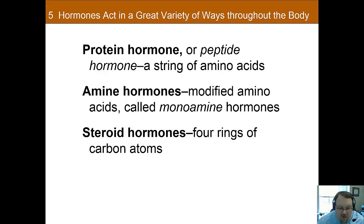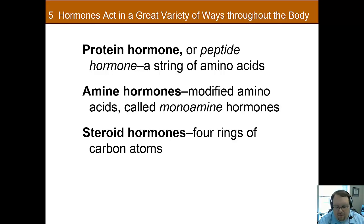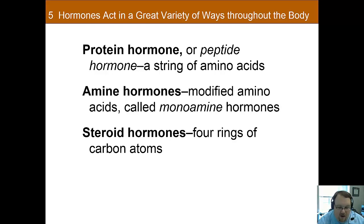Steroid hormones derive from cholesterol and thus share its 4-carbon ring structure. One important aspect of steroid hormones is that they're lipid soluble. The reason this is important is because the cell wall is a lipid bilayer — lipids keep molecules from passing in or out because most molecules in the extracellular and intracellular fluids are not lipid soluble. However, with steroids, since they are lipid soluble, they can actually pass through that wall very easily.